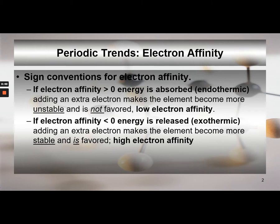Electron affinity can be discussed in terms of both its behavior and its energy value. If the electron affinity value is greater than zero, it's endothermic — energy is absorbed and it's not favored, so it has a low affinity. If the value is less than zero, energy is released — it's exothermic — adding an electron is stable and highly favorable, giving it a high affinity to form a negative ion.